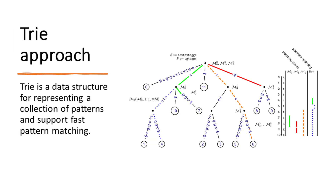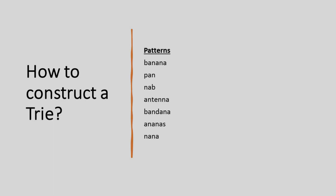Instead of asking individual patterns to go along the genome one at a time, we can pack all of the patterns into a single structure and move this structure along the genome only once. This data structure is called a trie, coming from the word 'retrieval.' The trie is a data structure for representing a collection of patterns and supports fast pattern matching. The idea is to combine all these patterns into a rooted tree with branches labeled by letters, where every string in the patterns corresponds to a path from the root to a leaf.